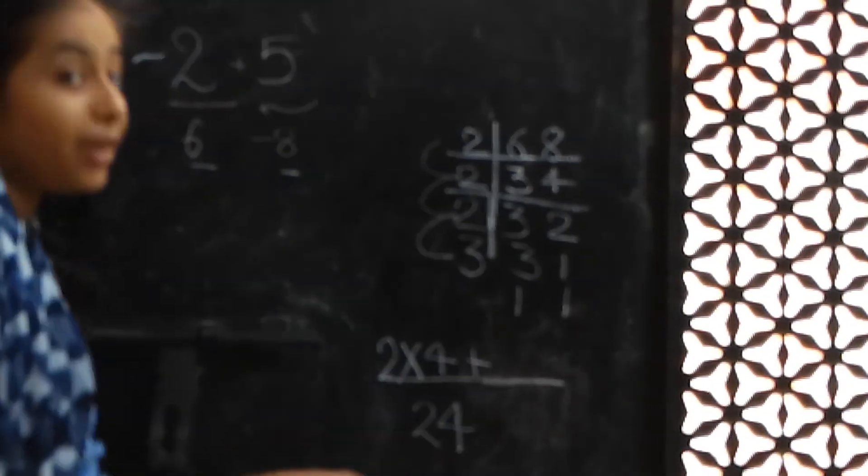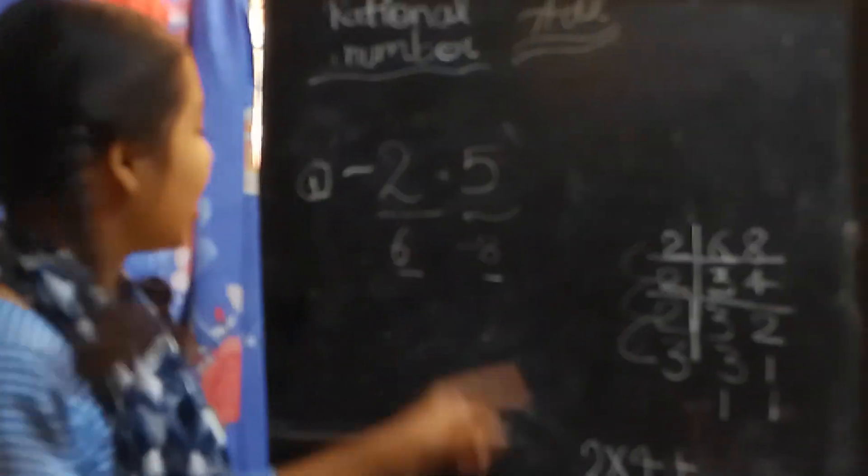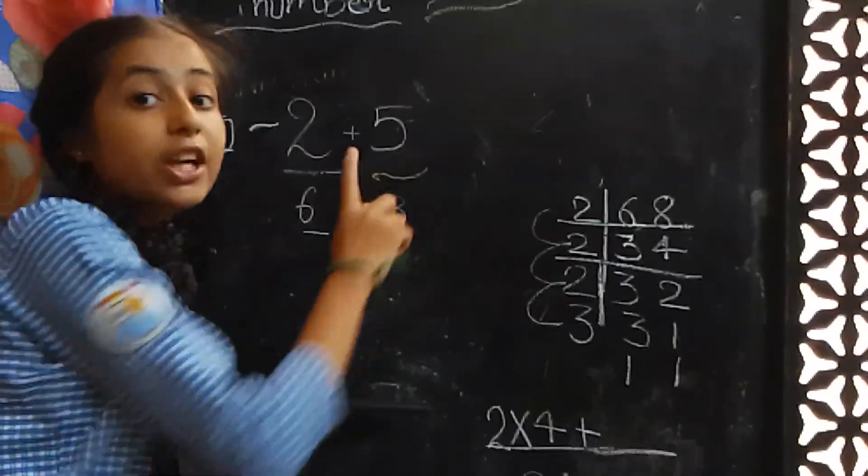8 to the table is 24, 3 times 4, 5 into 3.